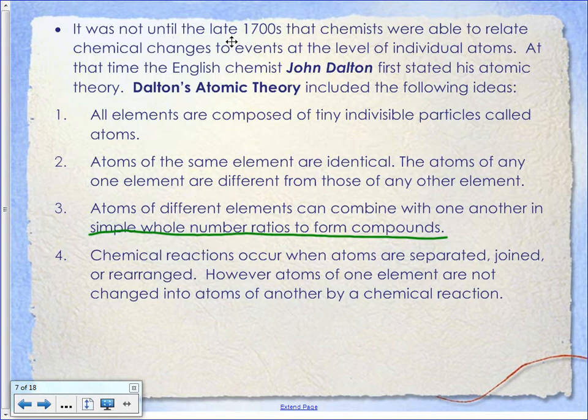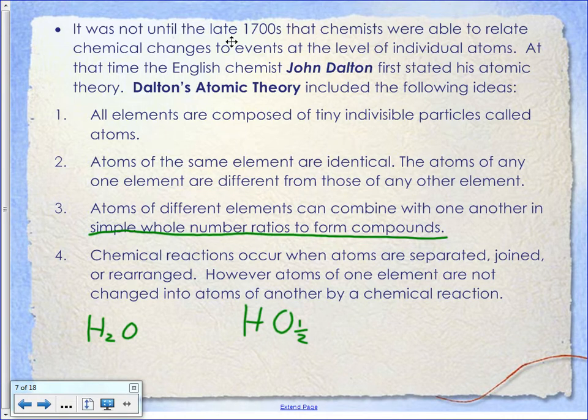That's what he means by simple whole number ratios. If you look at something simple like water — water is H2O. How many hydrogens? Two. How many oxygens? One. They're always a whole number. You've never seen a compound with a fraction in it, because it doesn't happen that way. You can't have half of an atom.